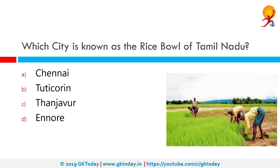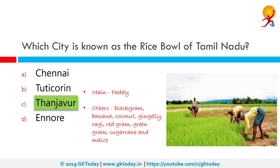Which city is known as the rice bowl of Tamil Nadu? The correct answer is Thanjavur. Paddy or unmilled rice is the crop mainly grown there. Other crops grown include black gram, banana, coconut, gingelly, ragi, red gram, green gram, sugarcane and maize. The total percentage of land fit for cultivation is 58%.